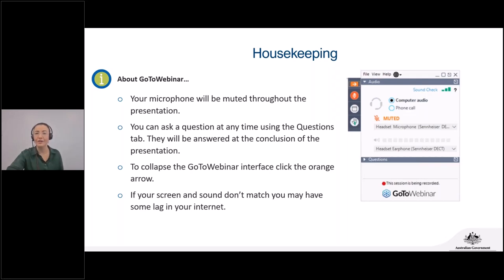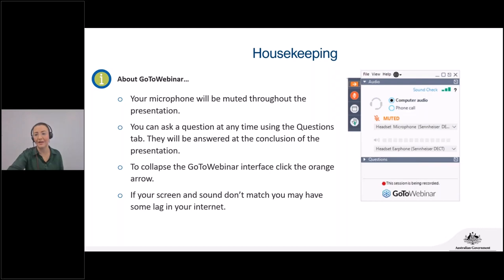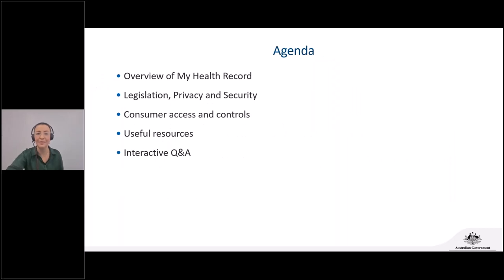To collapse the GoTo interface or make it a bit smaller, please click the orange arrow at the top of your screen — this will minimise it so it doesn't take up so much screen space. If your screen and sound don't match, it may be due to a poor internet connection. In that case, you may need to leave and come back into the session, which normally fixes the problem.